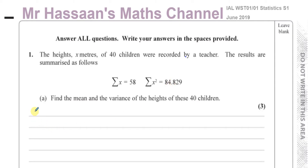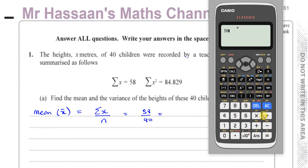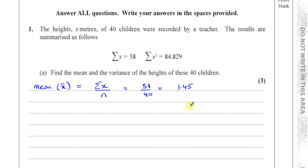First of all, the mean of the heights of the children is going to be the sum of all the entries divided by the number of entries, which is 58 divided by 40. That gives you 1.45 — the exact mean, not rounded.